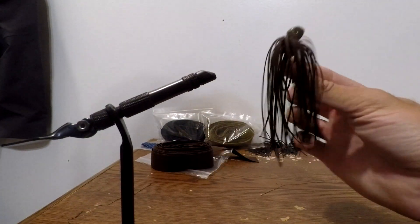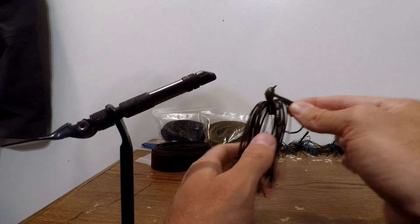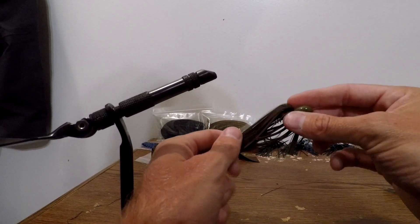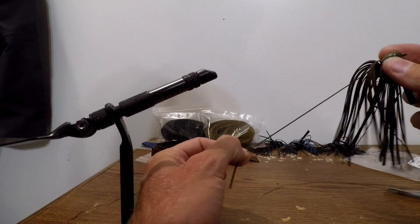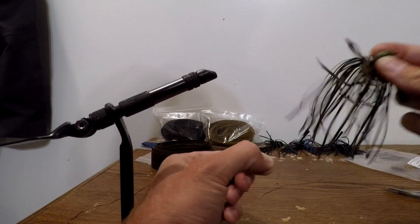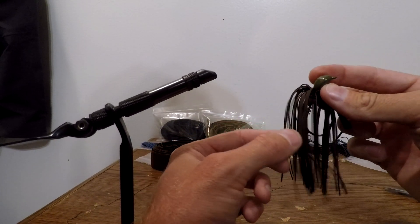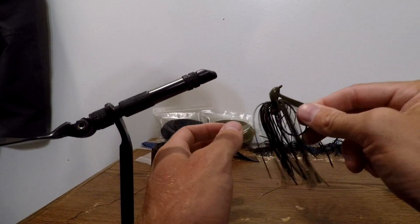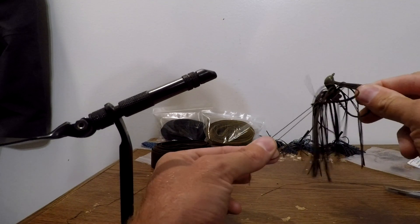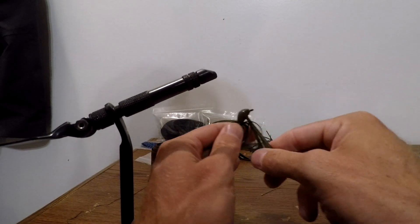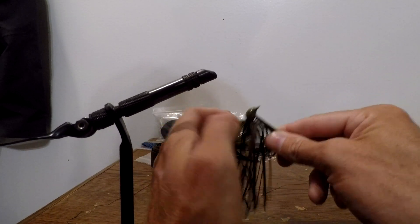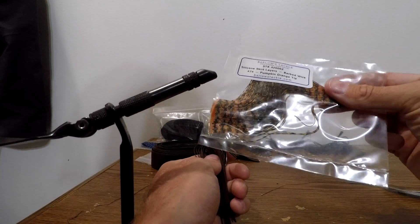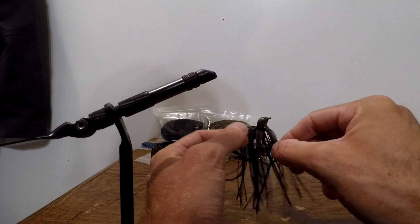Then we got a nice jig. It's got the living rubber there. I prefer this rubber because it really flares out in the water. These strands go crazy and really put off a lot of action. I just prefer it over the other type of silicone skirting out there. I will use that and add some color to it. Like if I wanted to do brown and orange, I would throw a little bit of this orange in there and make it look like a crayfish.